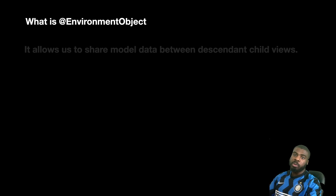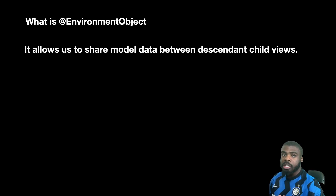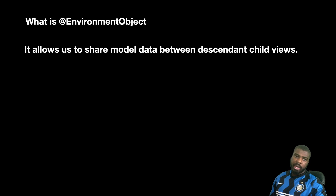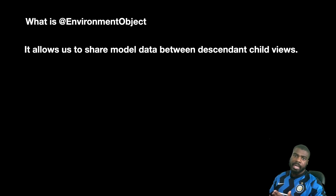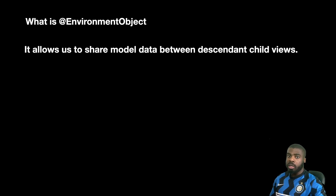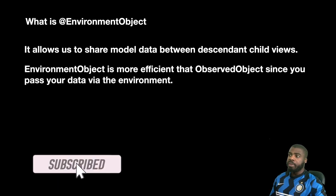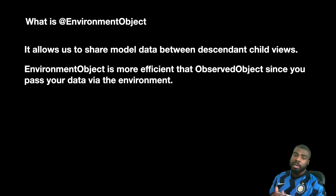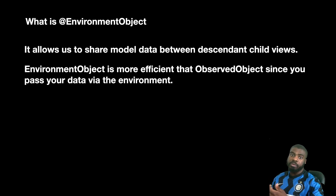So what are environment objects? Essentially, it basically allows us to share a model or data between different views. If you've ever worked with UIKit before, you may have used segues, a delegate, or dependency injection to pass data. Essentially, environment object is that in SwiftUI — it allows you to pass data between different views. It's also more efficient to use environment objects over observed objects because all the data gets sent to the environment, which is basically like the app state. Any child views that use an environment property wrapper can access that data.